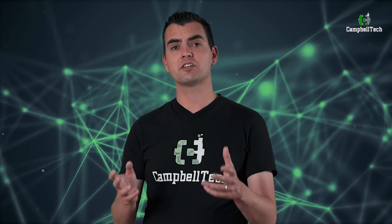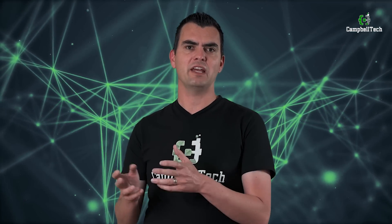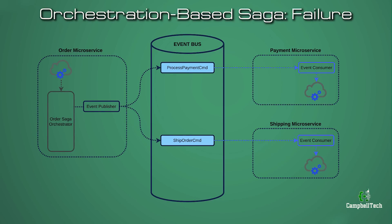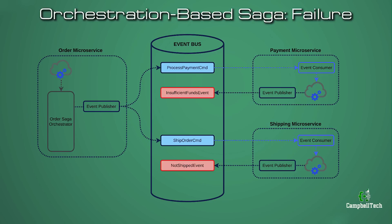In this scenario, everything went as planned. But what happens if there's a failure with the orchestration-based saga? The order saga orchestrator can also listen to failure-type events. If the payment service publishes an insufficient-funds event, or the shipping microservice publishes a not-shipped event, the order saga orchestrator would handle those events and update the order as rejected. It would also take responsibility for executing a series of compensating transactions to undo all of these changes.